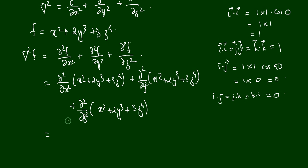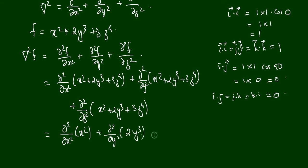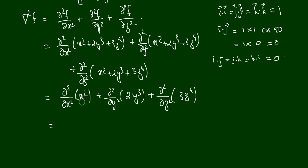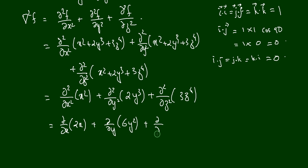Since partial differentiation with respect to x acts only on the x terms, we get ∂²/∂x² of x² plus ∂²/∂y² of 2y³ plus ∂²/∂z² of 3z⁴. Taking the first derivatives: the first derivative of x² is 2x, of 2y³ is 6y², and of 3z⁴ is 12z³.